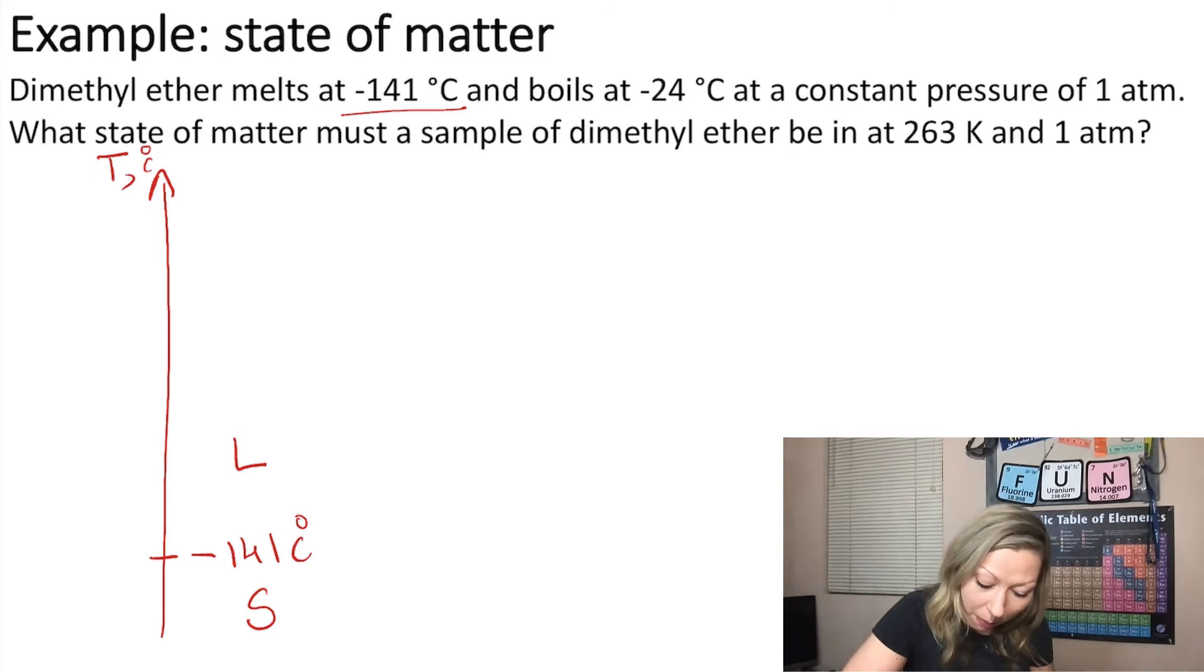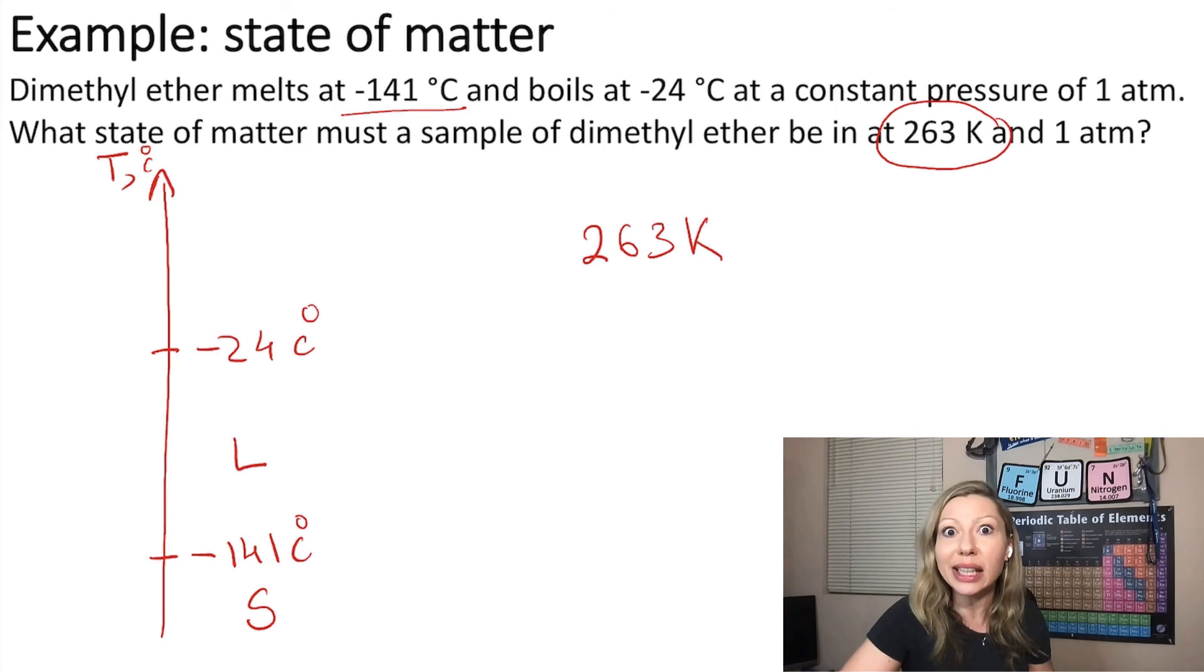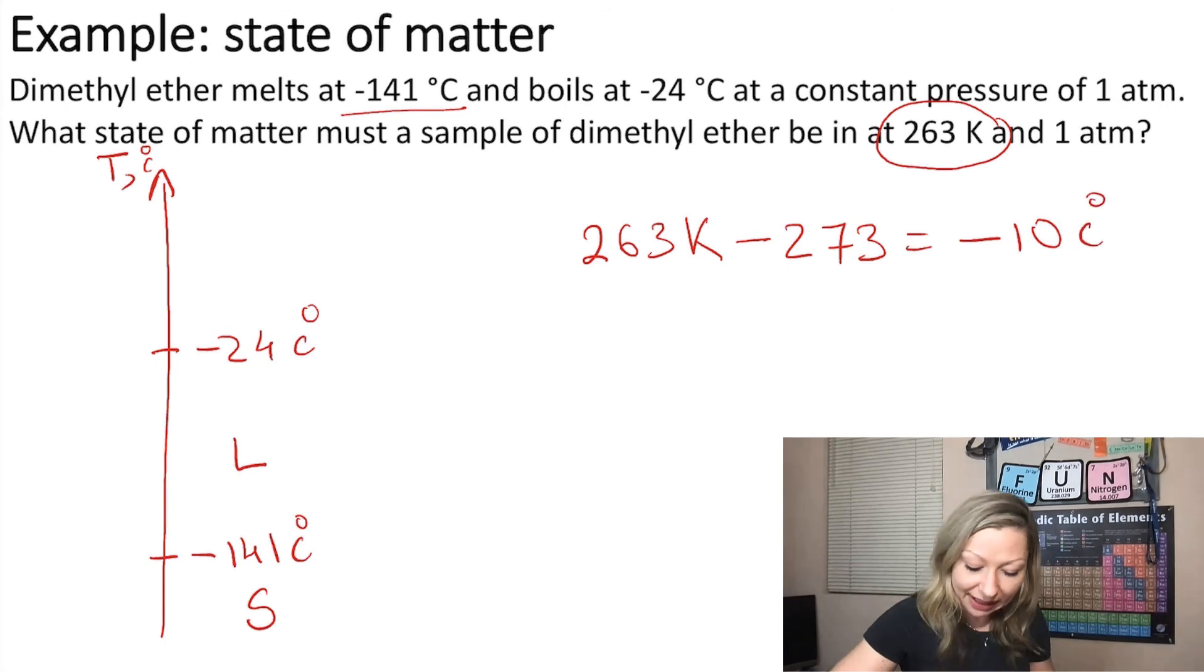It boils at minus 24 degrees Celsius, and I have to figure out the state of matter at 263 Kelvin. The pressure is always 1 atm. Now I have to convert the Kelvin temperature into Celsius. Remember that the difference between Kelvin and Celsius temperatures is 273, so I take 263 minus 273 and I'm going to get minus 10 degrees Celsius.